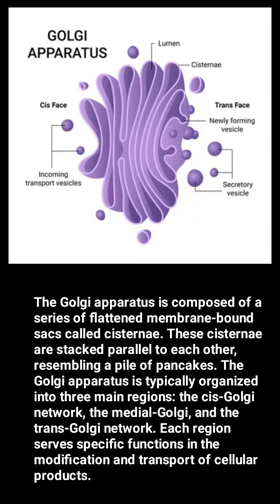Structure of the Golgi apparatus. The Golgi apparatus is composed of a series of flattened membrane-bound sacs called cisternae. These cisternae are stacked parallel to each other, resembling a pile of pancakes.